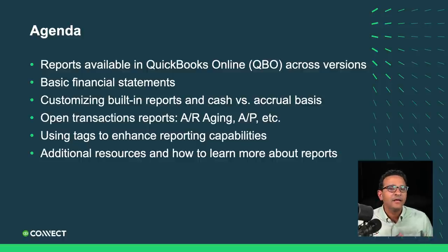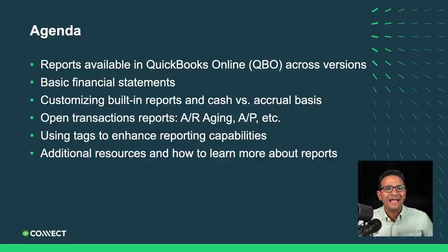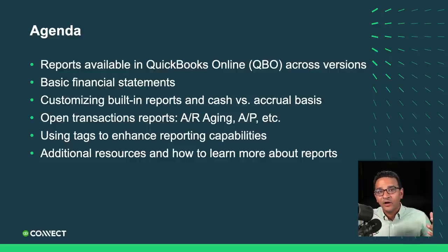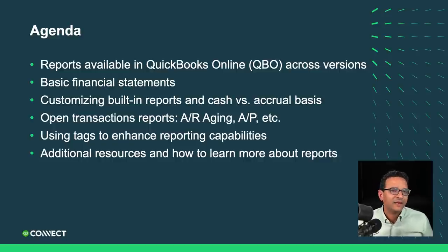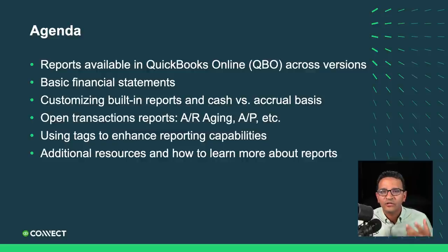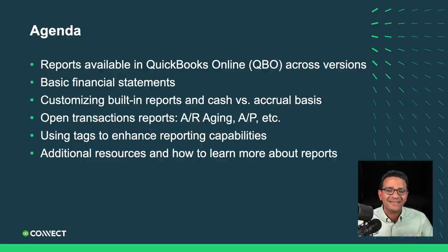What does cash versus accrual mean? Why does it matter to a small business owner to understand the distinction? Then we're going to discuss open transaction reports — things like accounts receivable aging reports, accounts payable reports, open invoices, and unpaid bill reports. These reports represent transactions that have not been completed in the accounting cycle; they're open because they haven't been paid or applied. Then we'll discuss tags, which is the ultimate way to enhance your reporting experience in QuickBooks Online. Lastly, we'll discuss additional resources so you can learn more about reports.